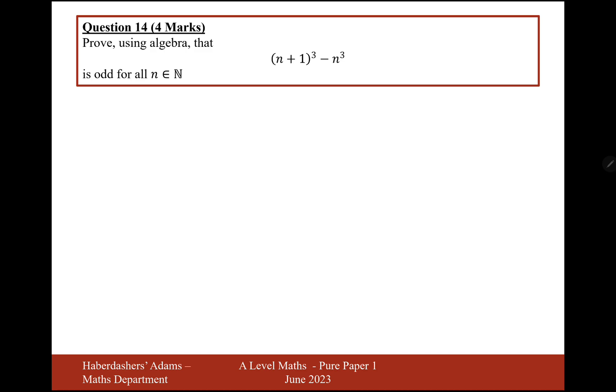Okay, well let's start off by expanding this. n plus 1 cubed minus n cubed. Let's expand these brackets. n plus 1, n plus 1, n plus 1 minus n cubed. And let's expand now. So n cubed plus 3n squared plus 3n plus 1 minus n cubed. We're going to get 3n squared plus 3n plus 1.